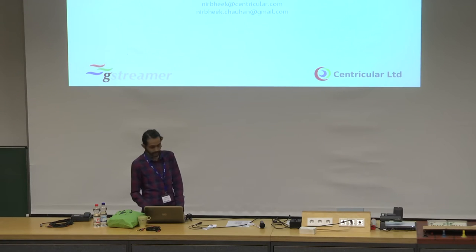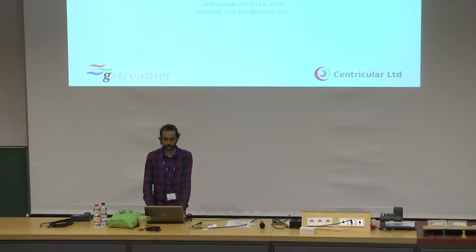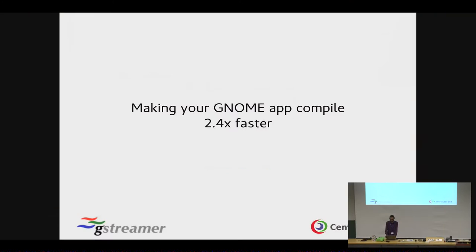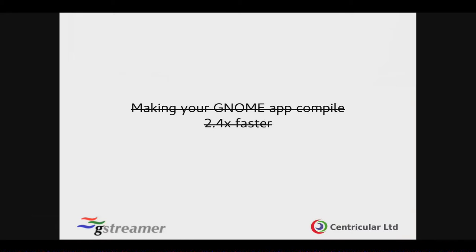I'm Nirbhik. I've been a GNOME contributor since 2007, sorry. And I'm here to talk about how to make your GNOME app compile two and a half times faster. Except that that's a bit of a lie. This was the original benchmarking I did, and that's not actually what I'm getting now, because that was on a hard disk. Now I have an SSD, so everything is a little bit faster. So the talk is actually making your GNOME app 40% faster.